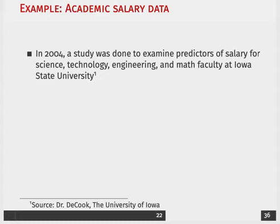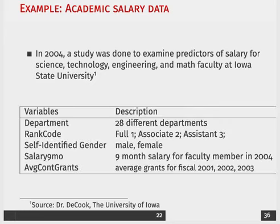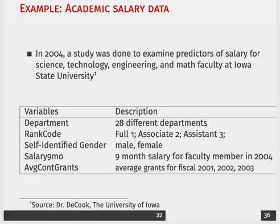If you remember back to last module, we briefly talked about a study conducted to predict salaries for different levels of professors. This data comes from Iowa State, and the variables we have are the department the professor is from, their rank — assistant, associate, or full — with assistant being the lowest and untenured, and associate being tenured but not a full professor. We also have the self-identified gender of the professor, their salary, and the grants they received for fiscal years 2001, 2002, and 2003.